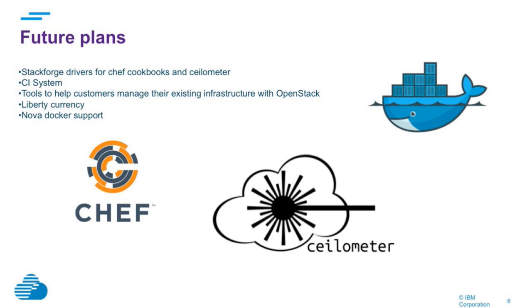We're also building tools to help our customers manage their existing infrastructure with OpenStack. A lot of our customers have large Z deployments with thousands of virtual machines and can't just recreate all of them in OpenStack — they need a migration path, so we're working on that. For Liberty currency, you should expect to see both Manage-to and Manage-from. And there was recently a port of Docker to Z, so we're looking at including Nova Docker support in our Liberty driver.